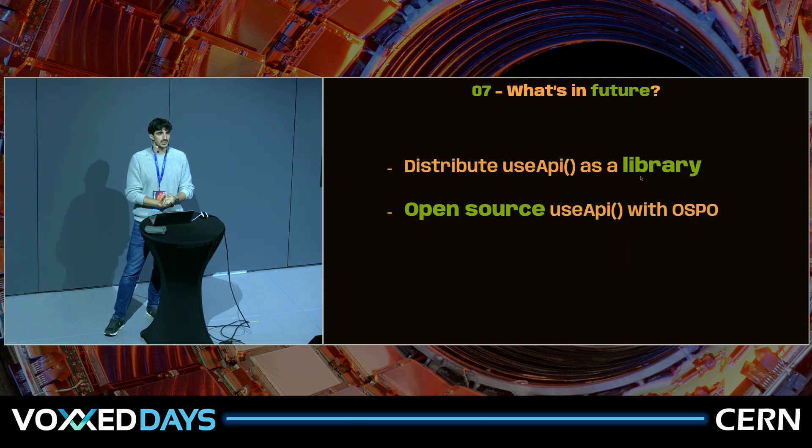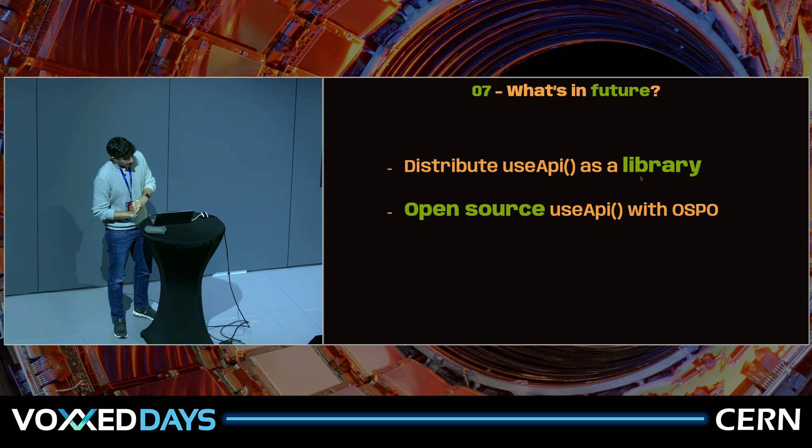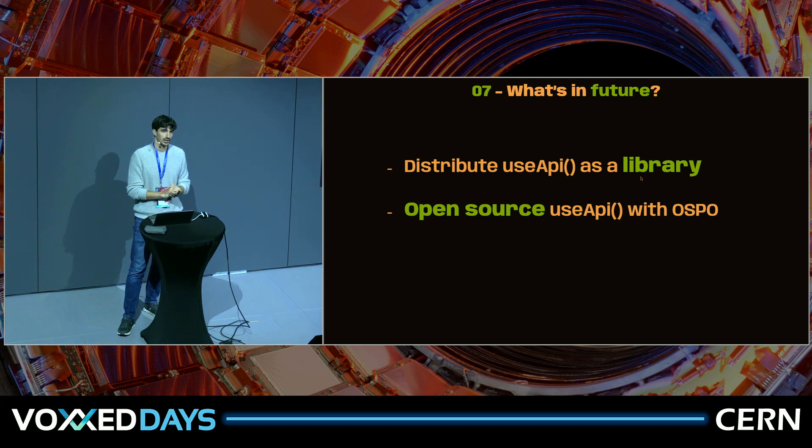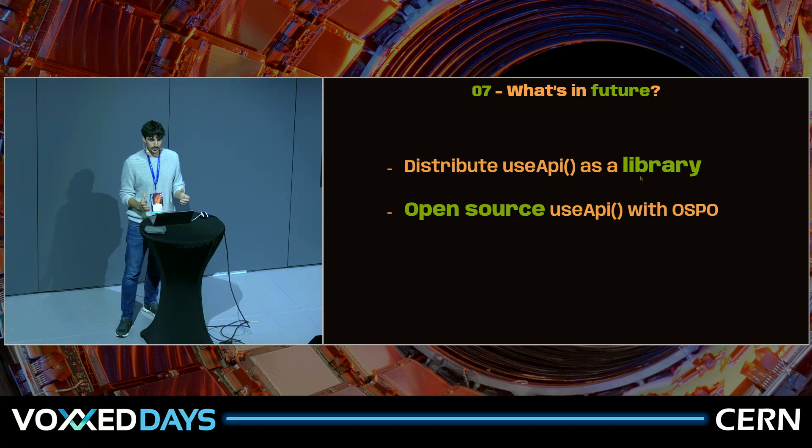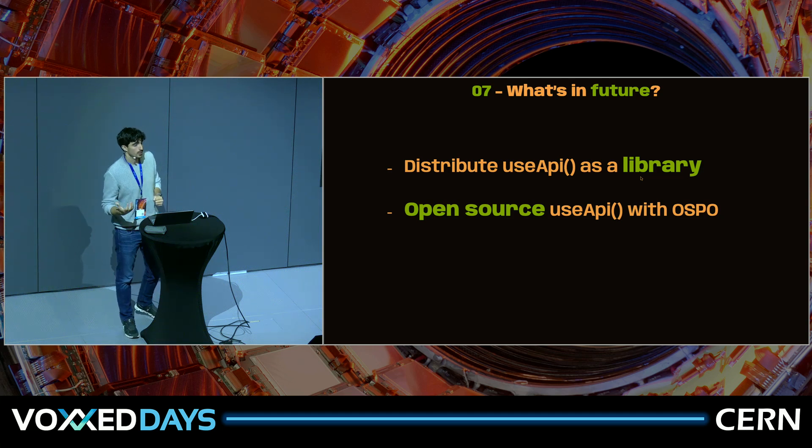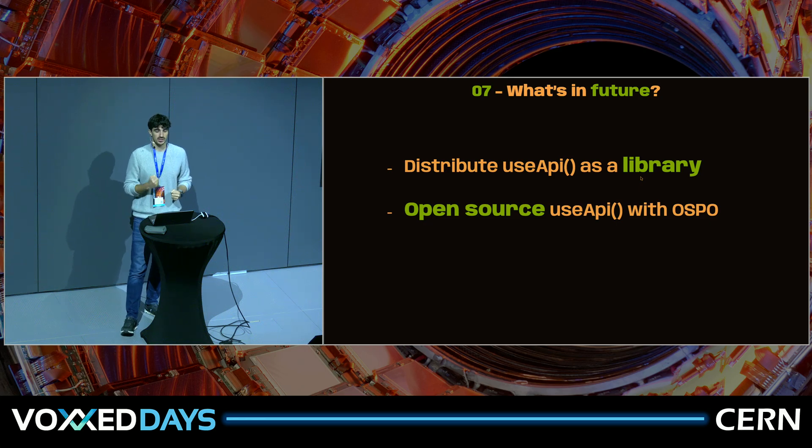So what's the future of this project? Actually, we want to push the development of use API hook even further. We want to distribute it as a separate library as a next step. And basically, this way, we can have different React projects benefit from it. Another thing is that we are in touch currently with the CERN's open-source program office to distribute this library as an open-source project. Because we think this technology is a convenient solution for a real problem in software development.